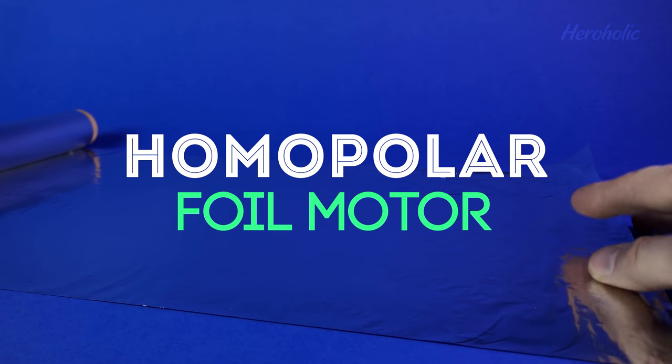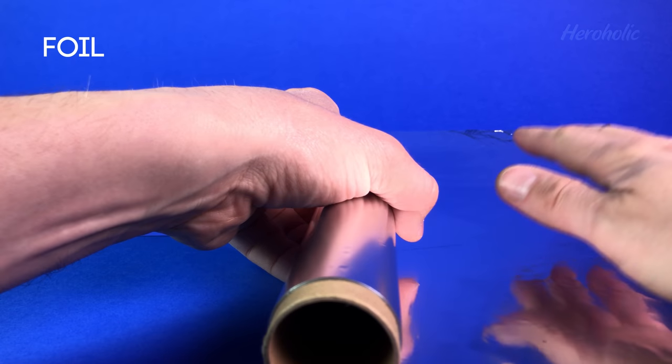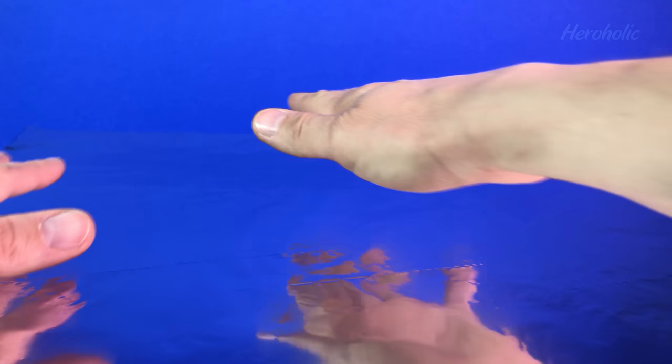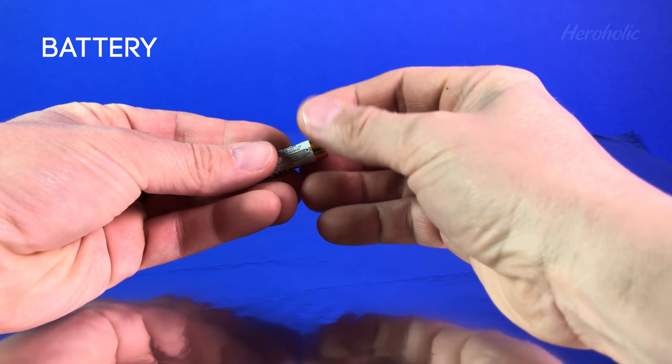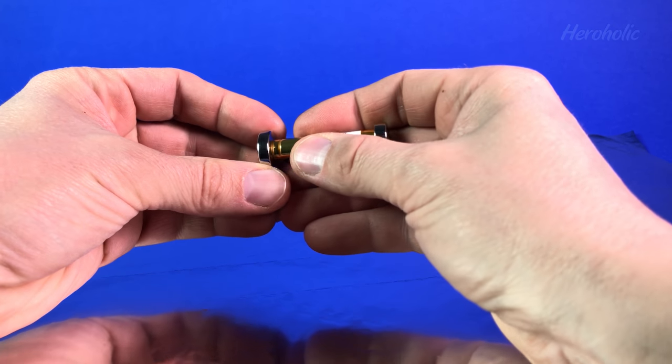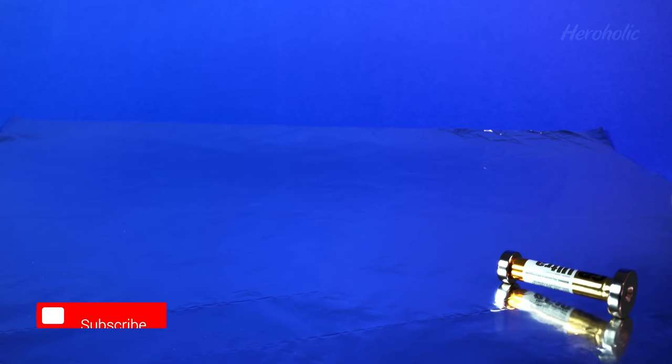Homopolar foil motor. Again, you will need a battery. You will also need two neodymium magnets. Just put the battery on a foil and it will drive by itself.